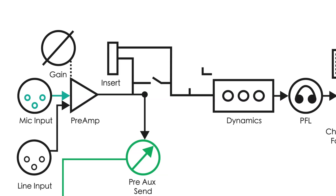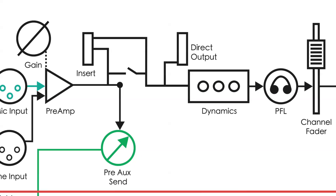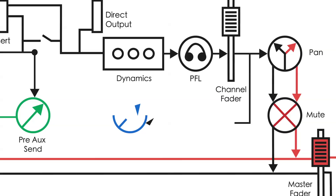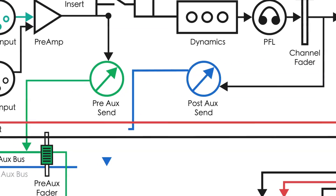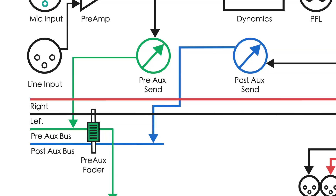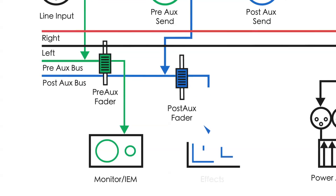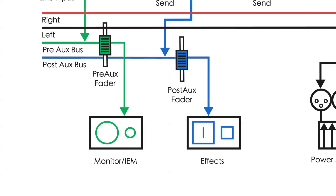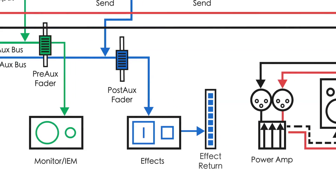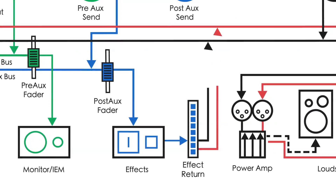After the preaux send comes the direct output, which is often used for multi-track recording or personal monitor systems. Sometimes the signal is also routed through a postaux send, which comes after the channel fader and routes to the postaux bus. The postaux bus is used to send multiple channels to the effects. Common effects include reverb and delay. The effects are then routed to an effect return that sends the signal back to the left and right bus.